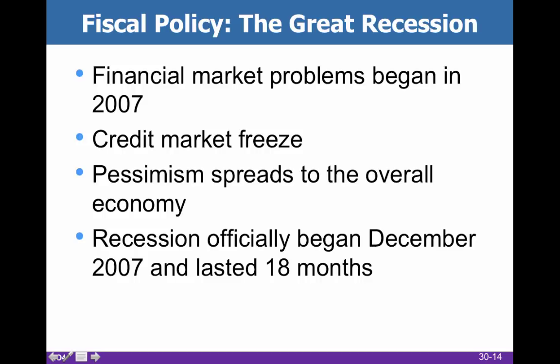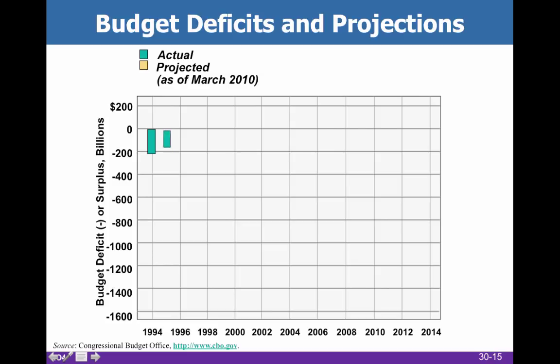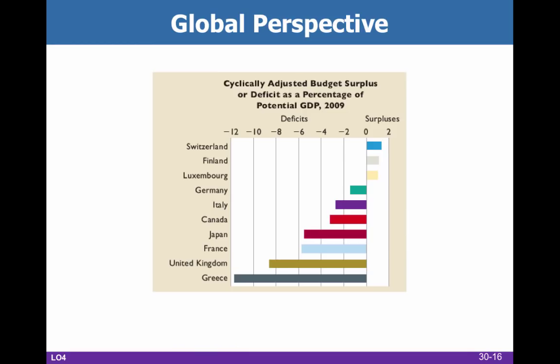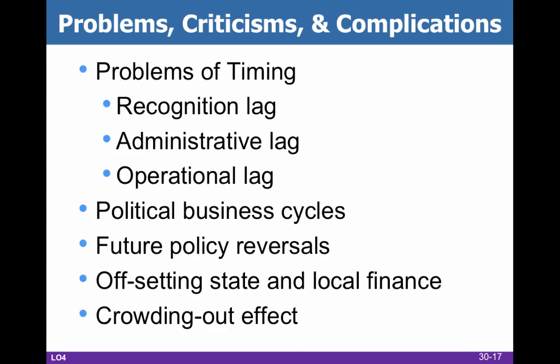We've talked a lot about the Great Recession, so we're not going to go through it here. Here are some budget deficits and projections. The graphs are correct up until 2009 when the book was published. You can also see a little bit of cyclically adjusted budget surpluses and deficits around the world.